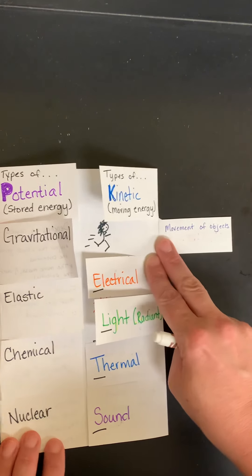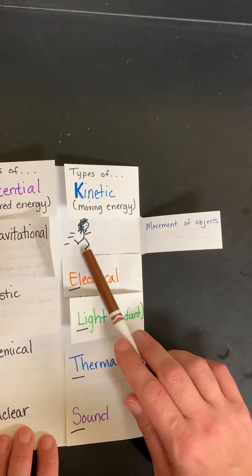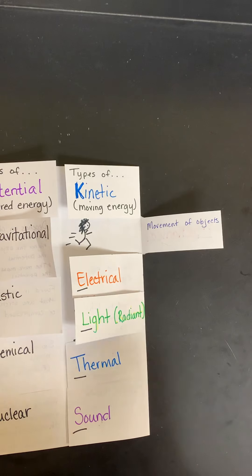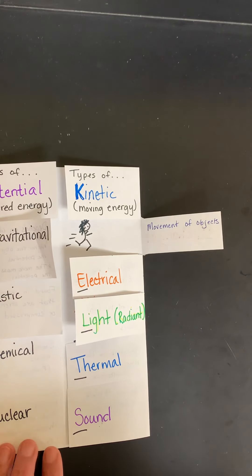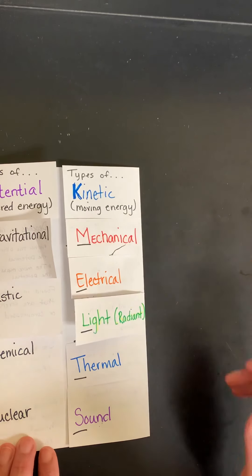So mechanical energy, what is that? Mechanical energy is the movement of objects. It could be a person running, it could be somebody using a hammer, it could be the roller coaster and the gears pulling the cart up to the top of the hill before it releases it. Those are all different types of kinetic energy in the mechanical kinetic energy.